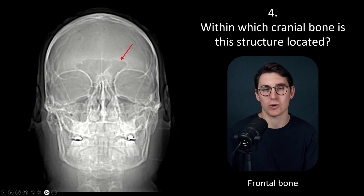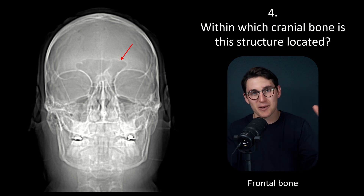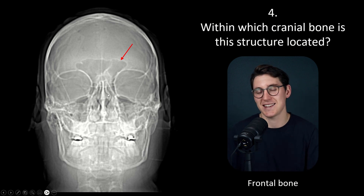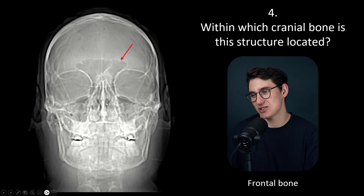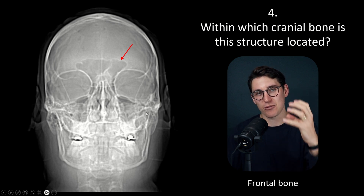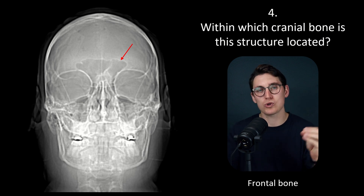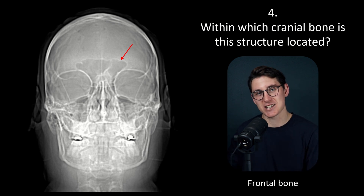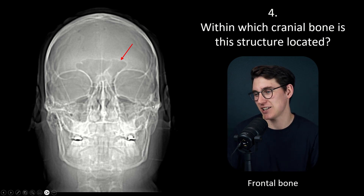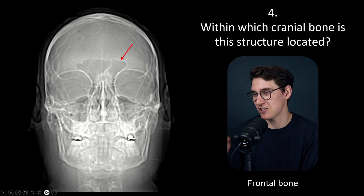A useful thing to remember about paranasal sinuses is where they drain. They're mucus-lined, fluid can fill up, and they all drain into the nasal cavity. Different sinuses drain into different regions: the frontal sinus, maxillary sinus, and anterior ethmoid air cells all drain into the middle nasal meatus. The sphenoid sinus and posterior ethmoidal air cells drain into the superior nasal meatus. Later in this talk we're going to look at the inferior nasal meatus.